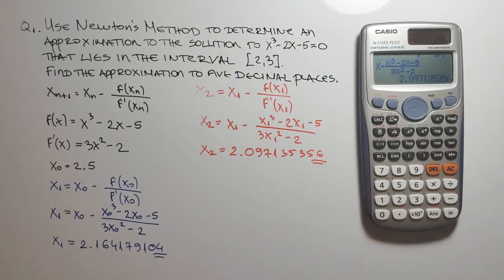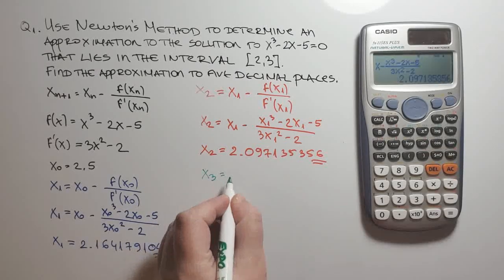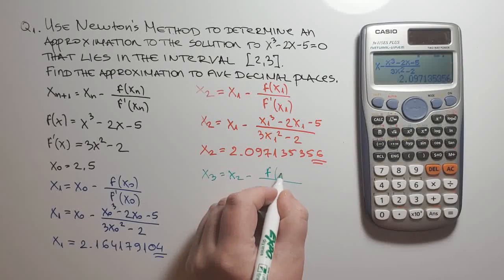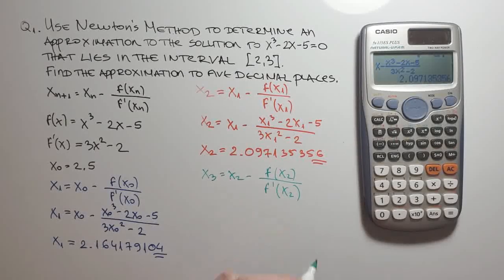We will solve now x sub 3. So for x sub 3, we have x sub 2 minus f of x sub 2 divided by f prime of x sub 2. Now the calculator has the last calculation of x sub 2. So I just press the calc button, I press the answer key and I press equal.